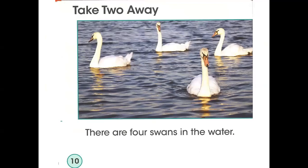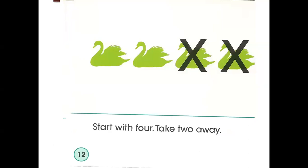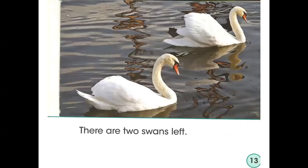Now this time we're going to take two away. There are four swans in the water. Can you count them? One, two, three, four. Two swans fly away. How many are left? We had four swans, and two are flying away. Start with four swans — one, two, three, four — and take two away. How many are left? There are two swans left.